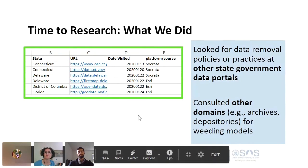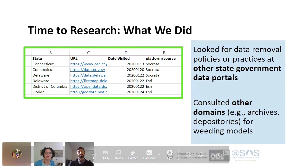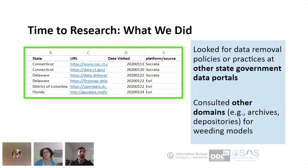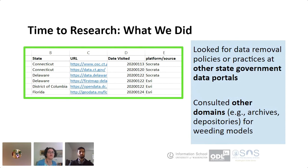So this is what we did: we decided we would look at other state government data portals, as many as we could find. And then we also looked at other domains that do selecting and weeding — besides libraries, that would be archives, depositories, scholarly repositories, and museums. And now I'm going to turn it over to Andrew, who's going to tell you a little bit about what we found.